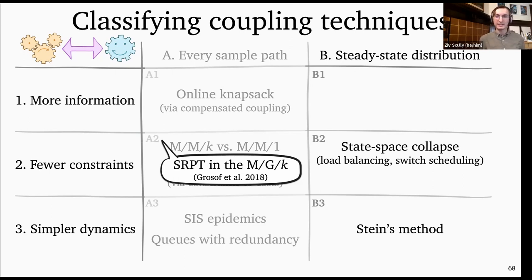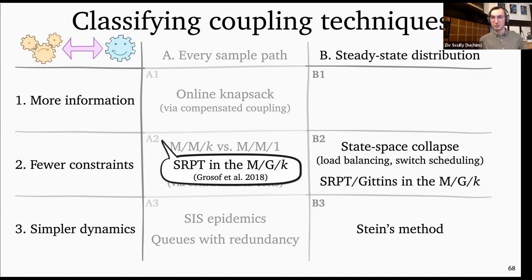What I'm going to tell you about in the rest of this tutorial is a new way of coupling the MG1 to the MGK — rather than being sample path based, it is steady state based. It works both for SRPT and Gittins. For simplicity, I'm going to focus on SRPT, but I want to emphasize that it works for both. And even though the SRPT results were already shown using a sample path technique, I want to showcase the new technique with as little new machinery as possible.